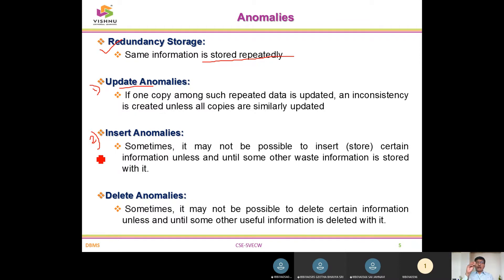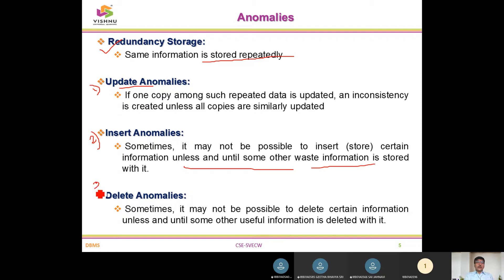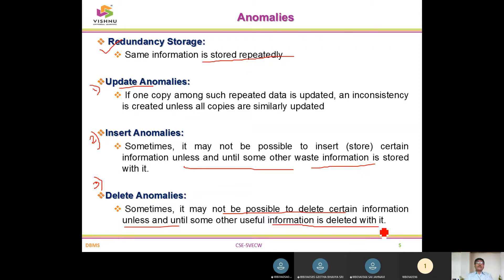The second anomaly is the insert anomaly: along with useful information, some unnecessary or waste information is also going to be stored in the database, and that needs to be eliminated. The third is the delete anomaly: if something in a database is deleted, some useful information may also get deleted unintentionally. Similarly, an update to one copy requires all occurrences of that copy inside the database to be updated.